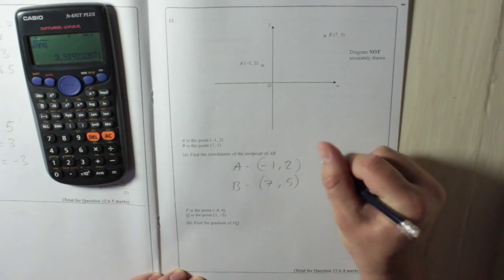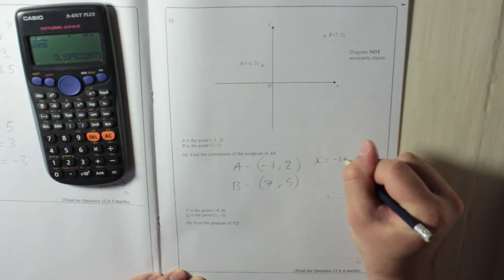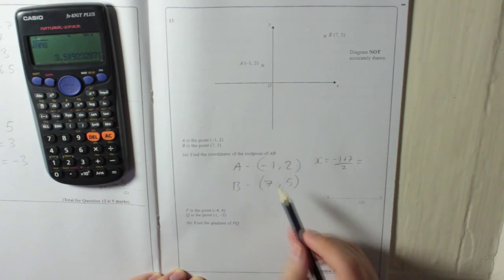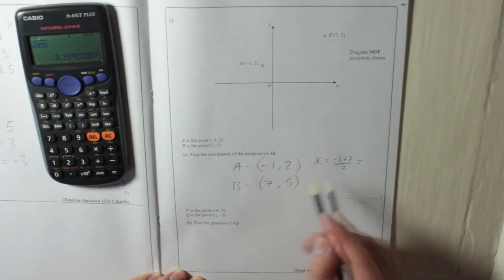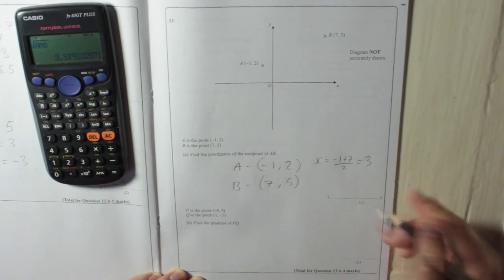If you're ever unsure, you can just put the x-coordinate is going to be minus 1 plus 7 over 2. Because basically you're adding them together and then dividing by 2. So minus 1 add 7 is 6, divide by 2 is 3. So we knew that.